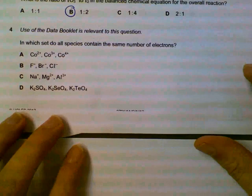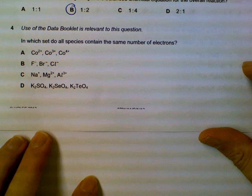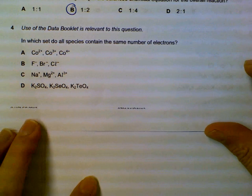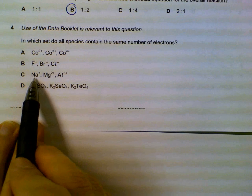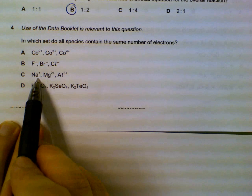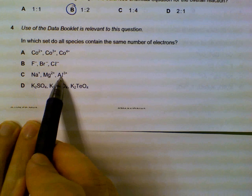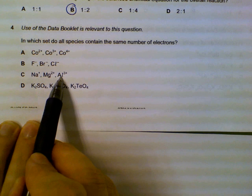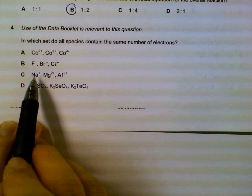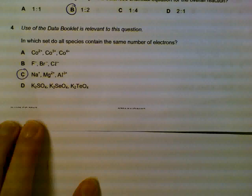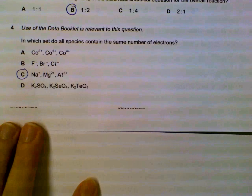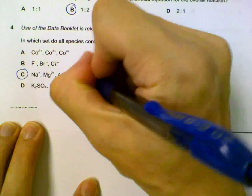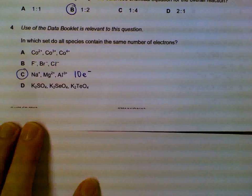Number four, which species contain the same number of electrons? The answer is C. Sodium plus, magnesium two plus, aluminum three plus, all have ten electrons after they lose one, two and three electrons respectively. So you can check your data booklet for the number of electrons they have and then take away the electrons to get the charges. You should get ten electrons for all of them.